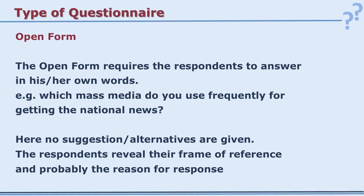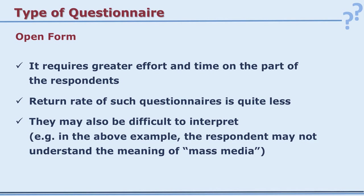In open form, using the same mass media example, instead of giving alternatives, we ask: 'Which mass media do you generally use for getting news?' Respondents write their own answers, so a variety of answers will come. It is then your task to code and group them. The respondent is expected to give their reasoning — both the answer and why they think so. However, it takes more time for the respondent to think and write.